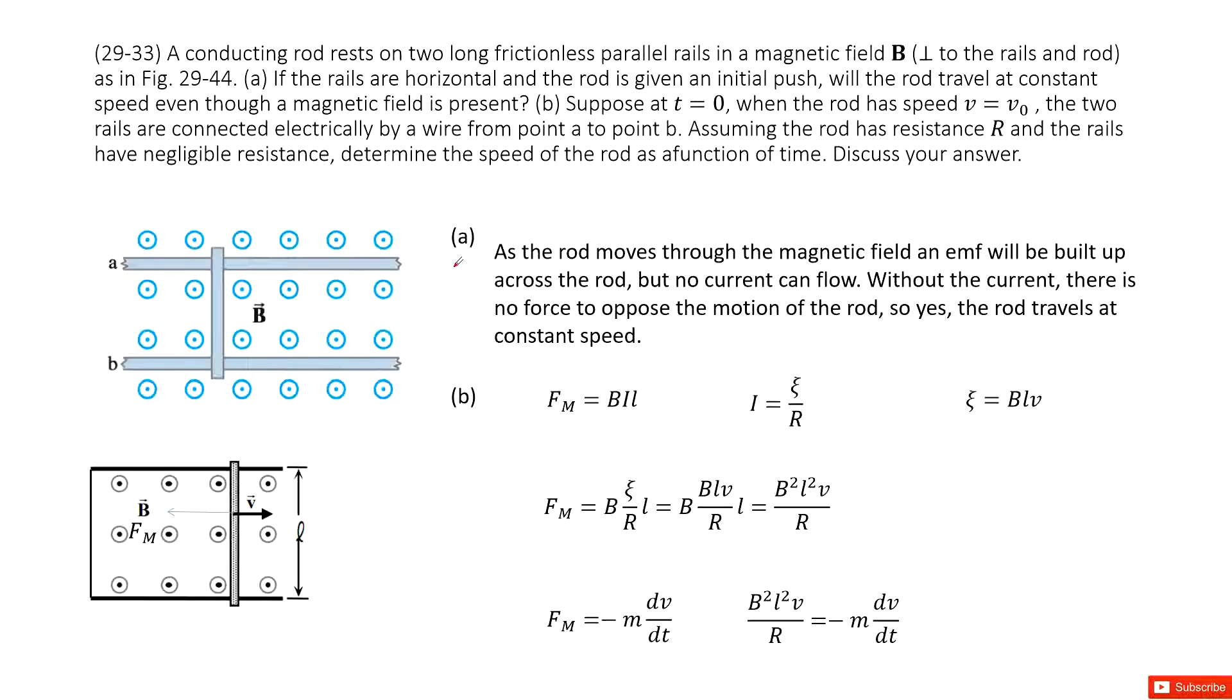Chapter 29 is about electromagnetic induction and Faraday's law. In this system, we have a conducting bar located on two long frictionless rails. The magnetic field is perpendicular to this railway and pointing out.